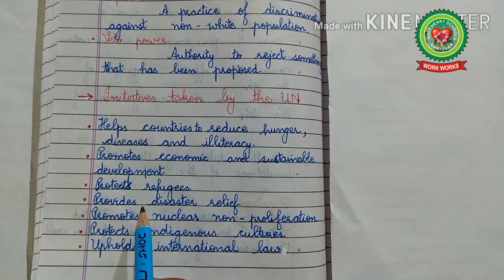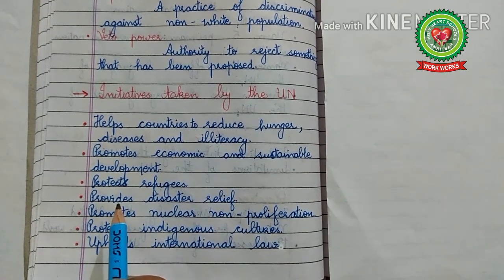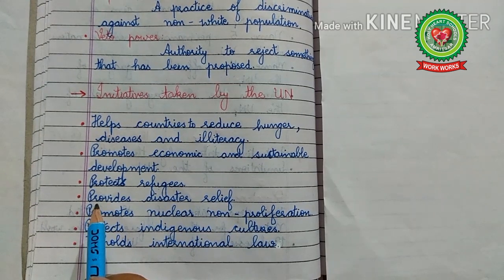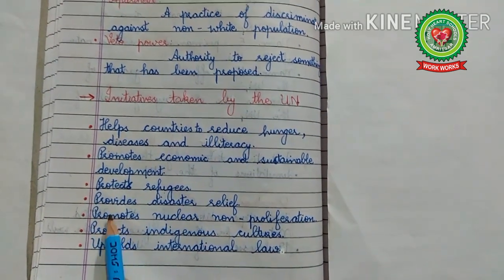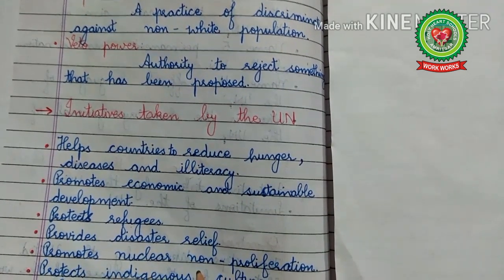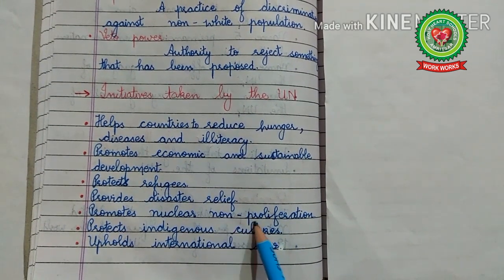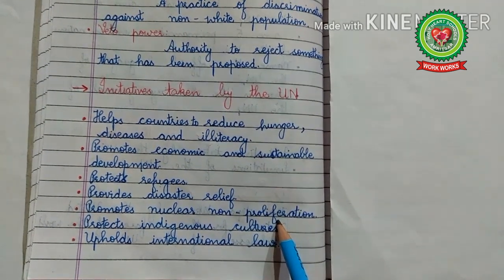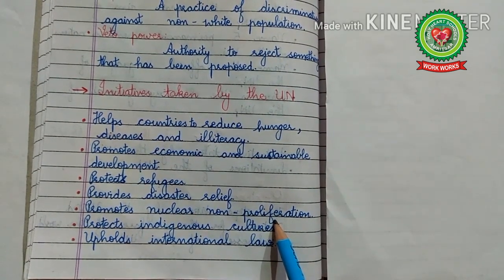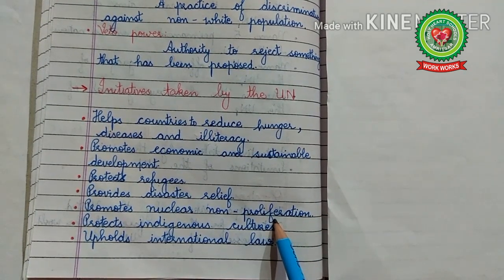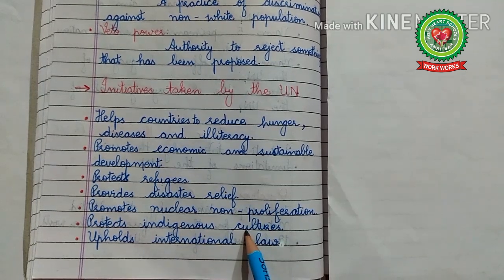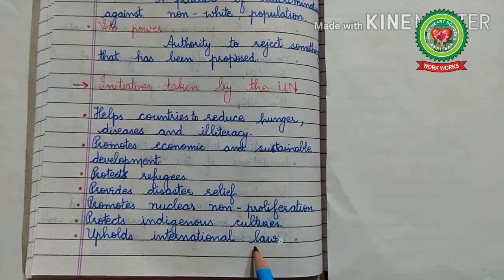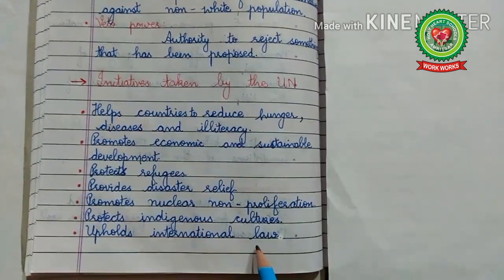Whenever natural disasters and emergencies arise, the UN coordinates and provides assistance to victims, working together with governments, the Red Cross, major aid organizations, and donors. The next initiative is promoting nuclear non-proliferation — the prevention of an increase in the number of countries possessing nuclear weapons. The UN also protects indigenous cultures, and upholds international law by giving advice on international laws.